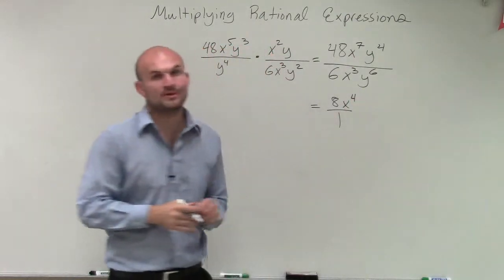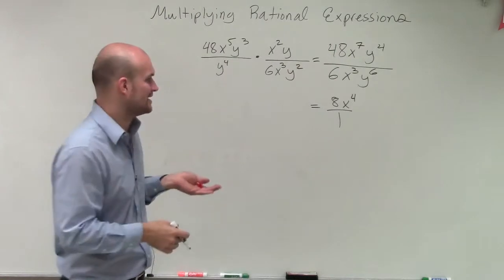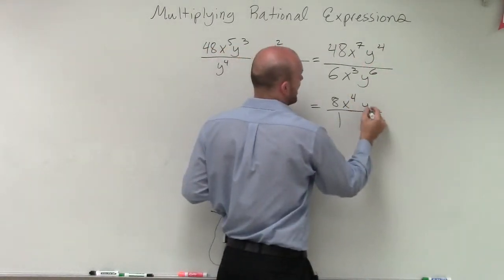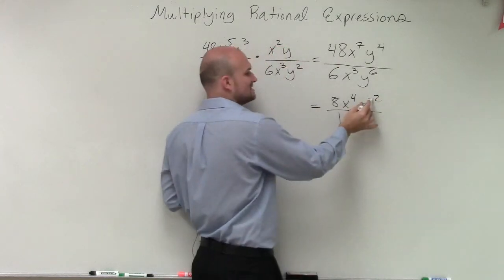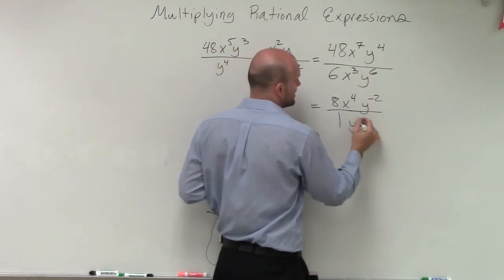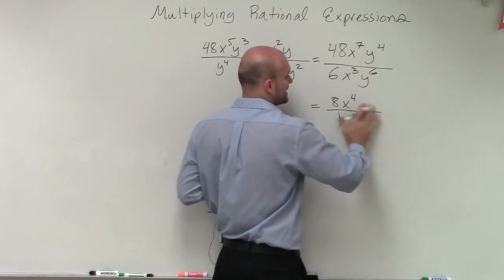Since it's positive, it goes in the numerator. y to the 4 minus 6 would be y to the negative second. But since it's negative, to make it positive, we put it in the denominator. So we rewrite it as a positive exponent in the denominator.